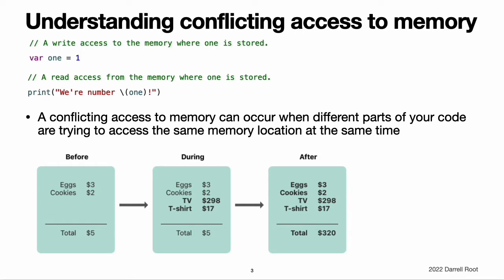Understanding Conflicting Access to Memory. Access to memory happens in your code when you do things like set the value of a variable or pass an argument to a function. For example, the following code contains both a read access and a write access. A conflicting access to memory can occur when different parts of your code are trying to access the same location in memory at the same time. Multiple accesses to a location in memory at the same time can produce unpredictable or inconsistent behavior.